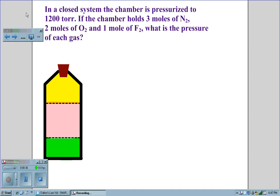In this sample problem, in a closed system, the chamber is pressurized to 1200 torr. If the chamber holds 3 moles of nitrogen, 2 moles of oxygen, and 1 mole of fluorine, what is the pressure of each gas?